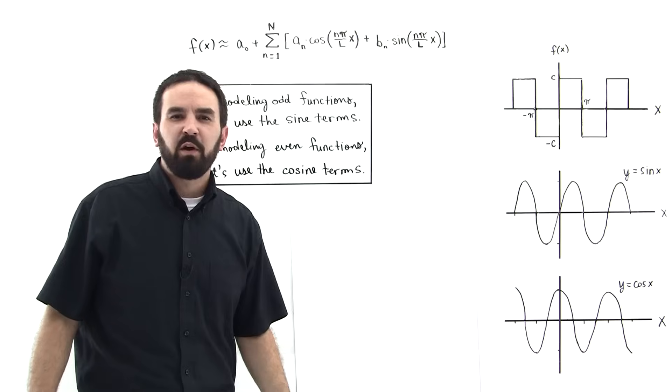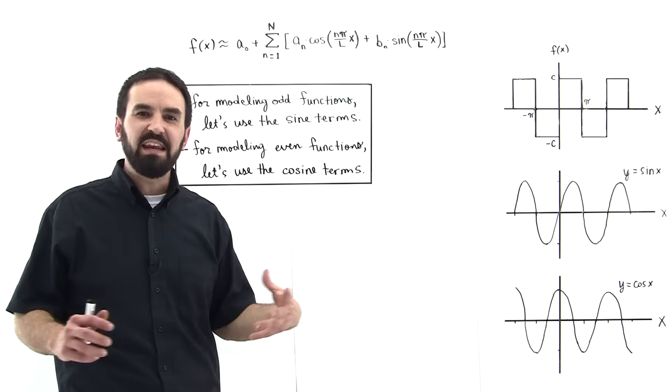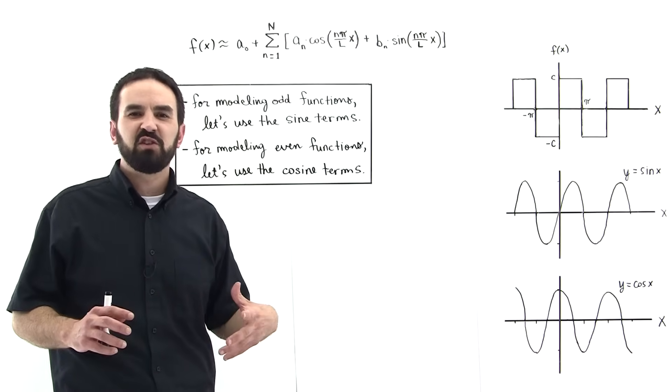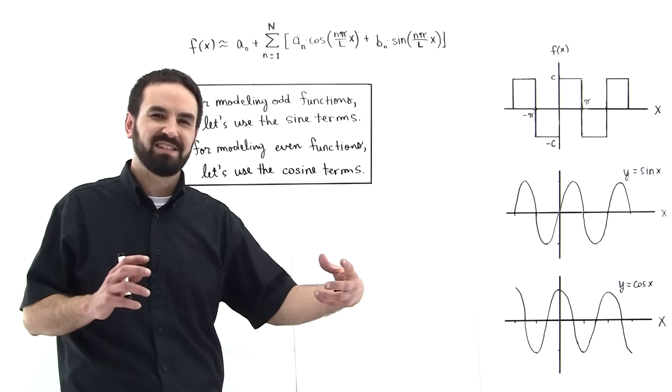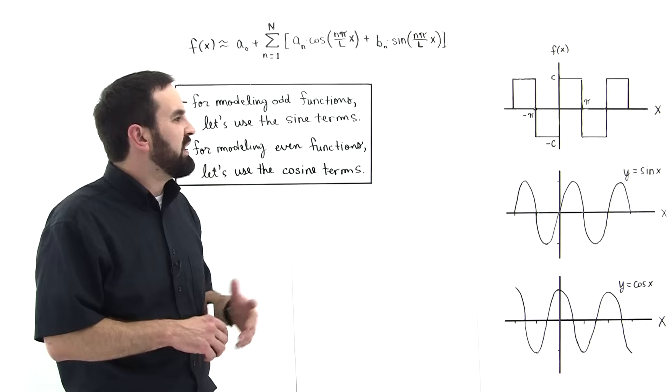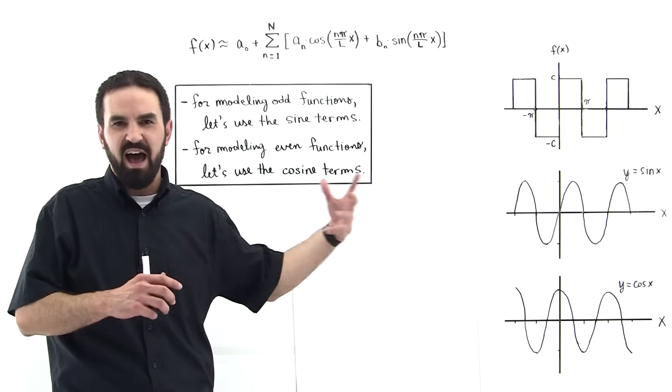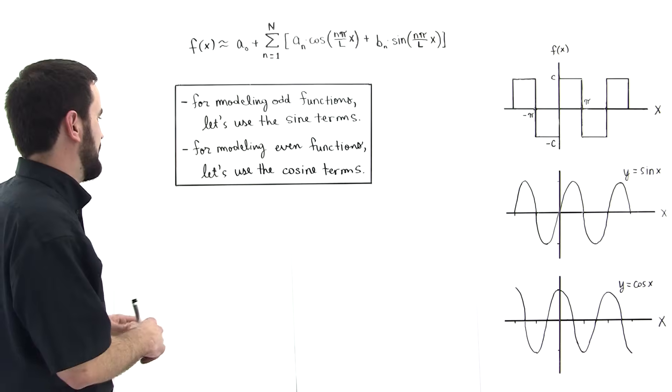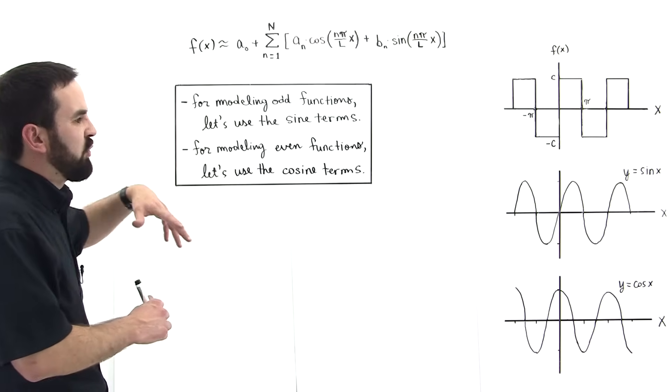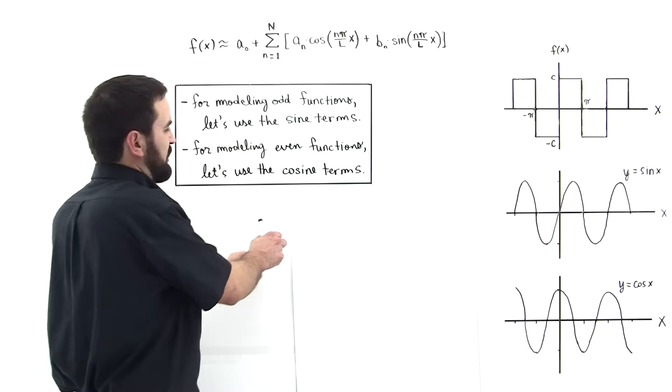Now, there will be some functions, remember I said any function. So, there will be some functions where you will use a combination of cosine and sine terms. But for this one, because it's strictly an odd function, you will only use the sine terms to model this function. And in the next tutorial, part two of this series, we will show that that's true.